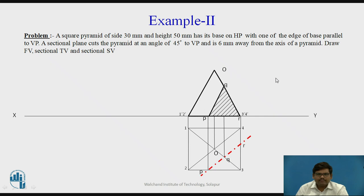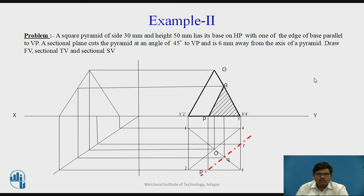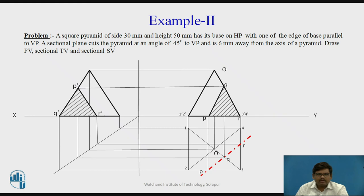Now we move to the side view. We draw the 45-degree line and project the base to complete the pyramid in the side view. Point Q is projected directly, then points P, Q, and R are each projected into the side view. We join these points together to get the sectional side view and darken the remaining edges. Similarly in the top view, we darken the remaining portion of the pyramid. This is the complete projection of the pyramid when it is cut by a cutting plane inclined at 45 degrees to VP.